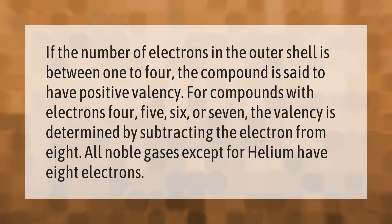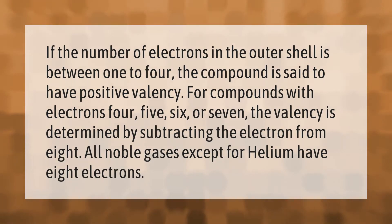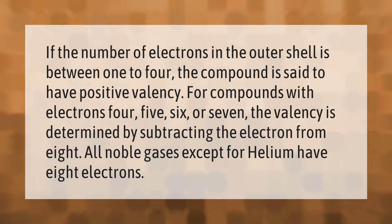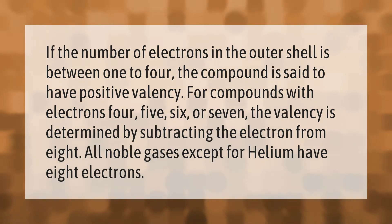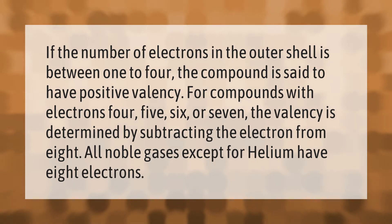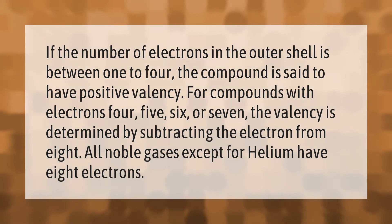If the number of electrons in the outer shell is between 1 to 4, the compound is said to have positive valency. For compounds with electrons 4, 5, 6, or 7, the valency is determined by subtracting the electron count from 8.